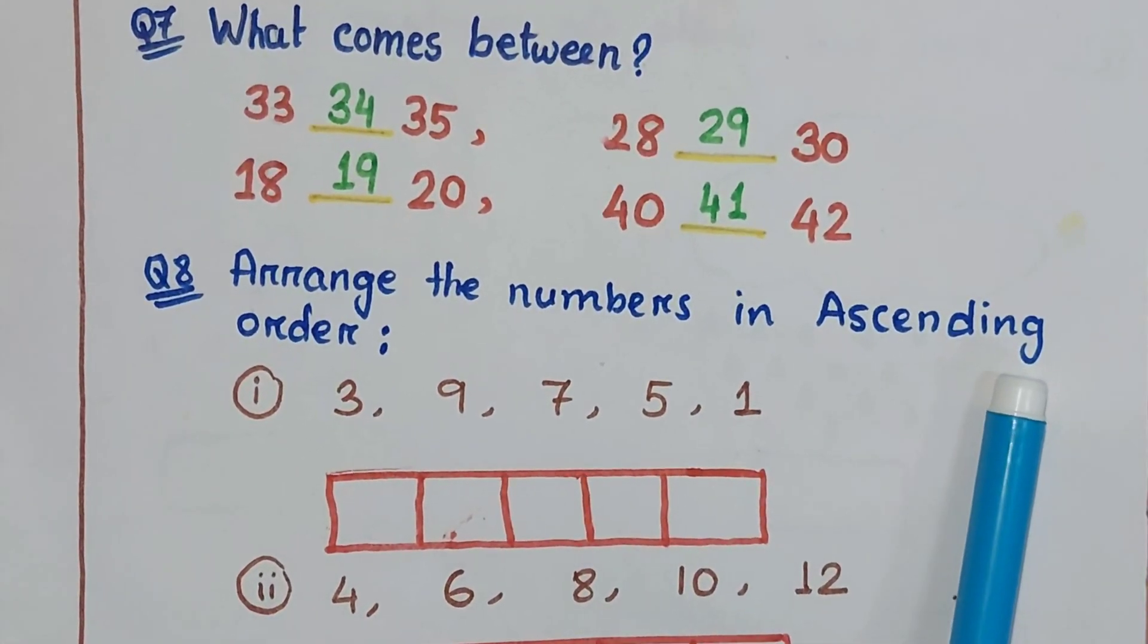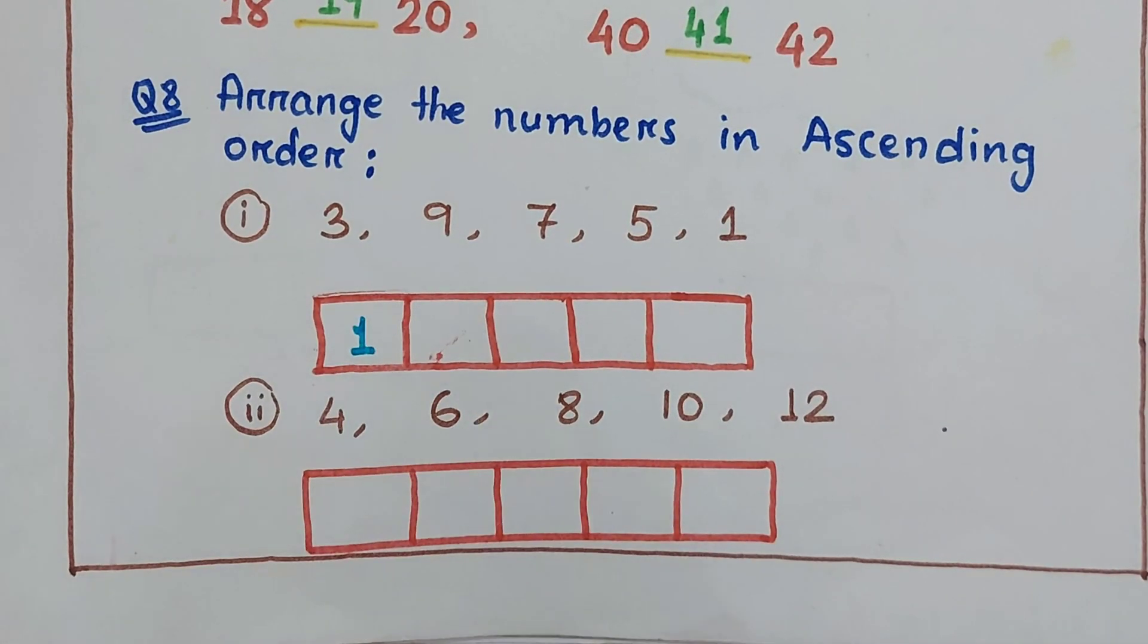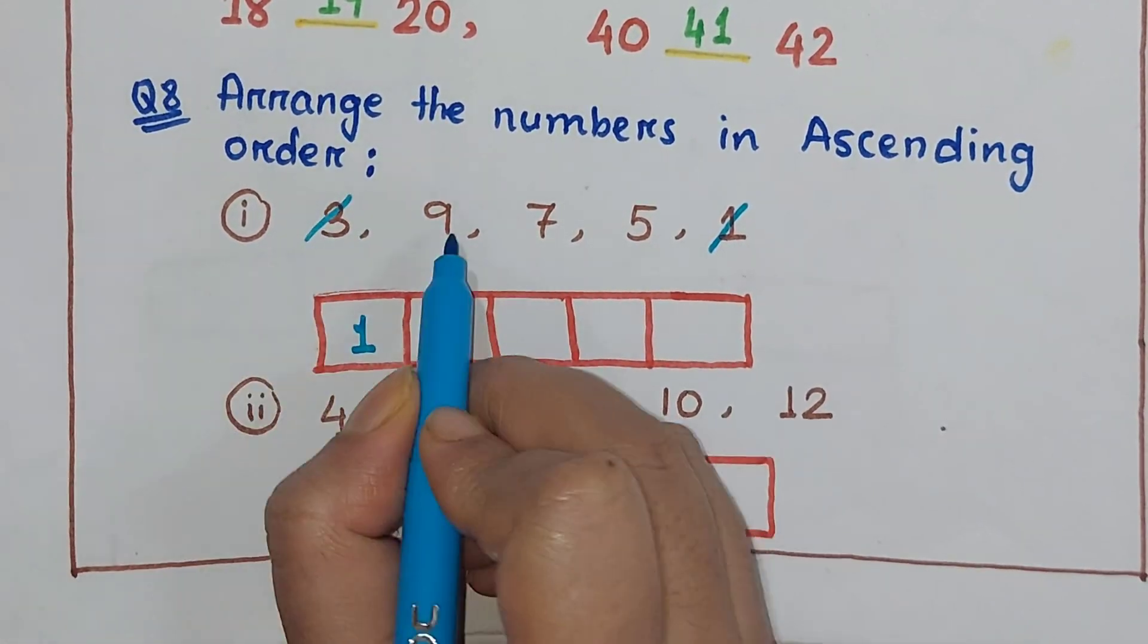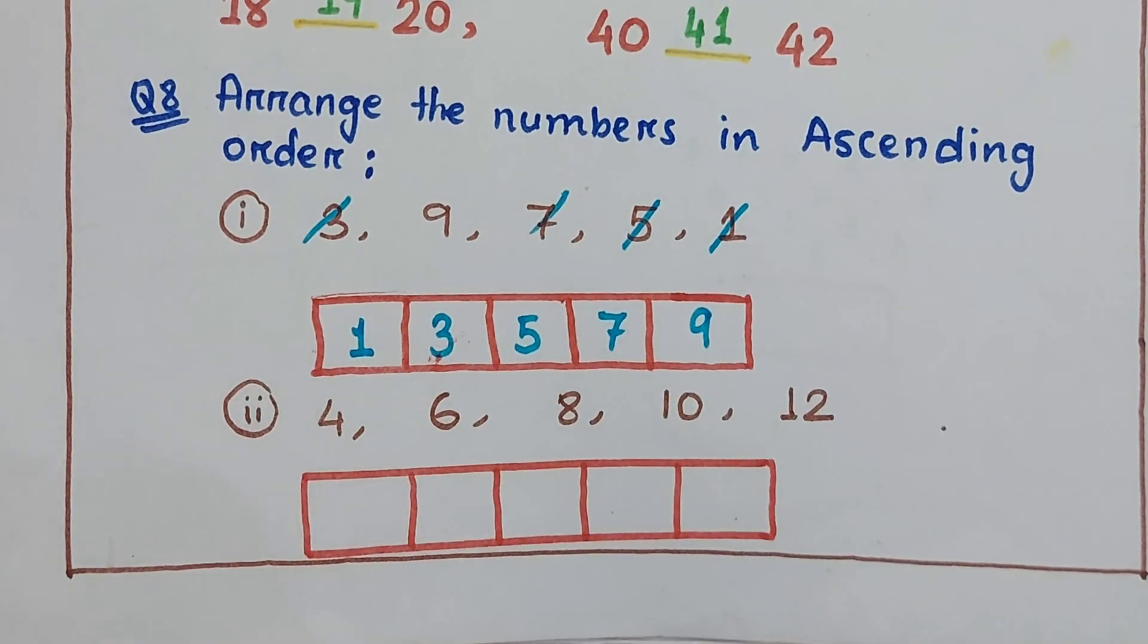Next question: arrange the numbers in ascending order. First you have to find out the smallest one, because ascending means small to big.